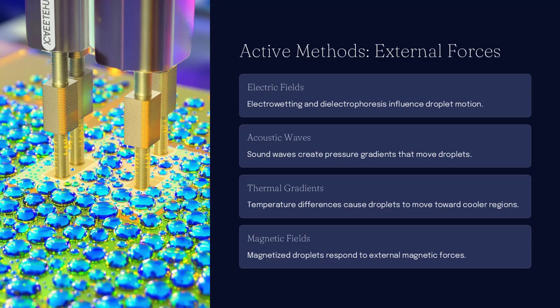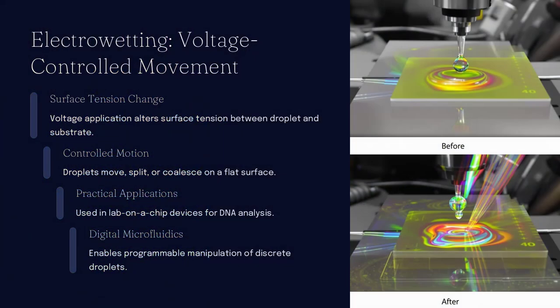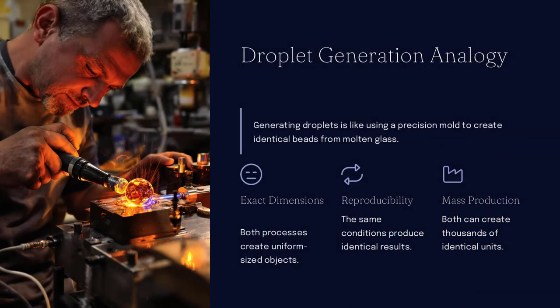One of the most widely used methods to manipulate droplets involves microchannels, tiny pathways etched into materials like PDMS, a silicon-based rubber.